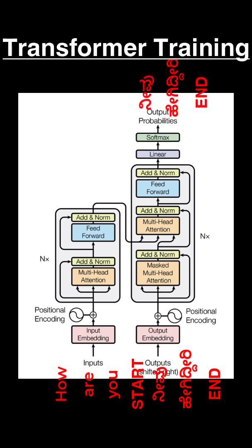This is because given the start token, we want to predict the first word of the sentence. Given the start token and the first word of the sentence, we want to predict the second word of the sentence.